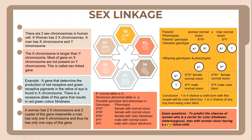In exam questions, they may test you to predict the chances of a woman who is a carrier for colorblindness and a man with normal vision having a colorblind child. What you need to do is plot a genetic diagram. The parent phenotypes are: woman with normal vision versus man with normal vision. The parent genotype for the woman with normal vision is X^A X^a, and for the man with normal vision it is X^A Y.